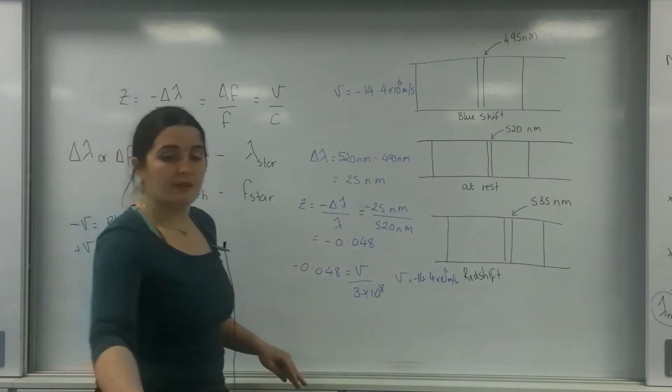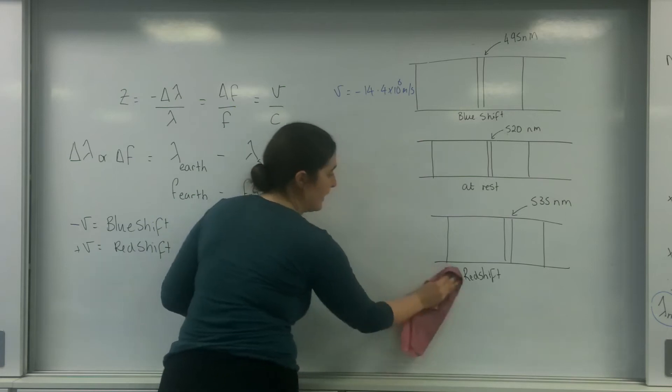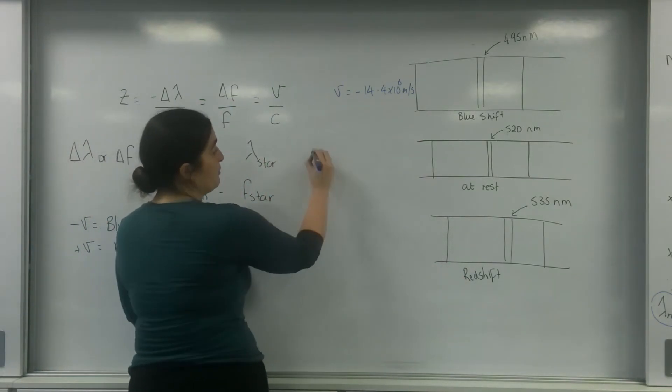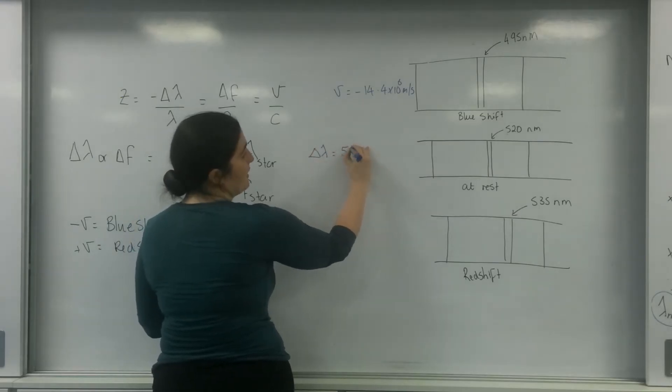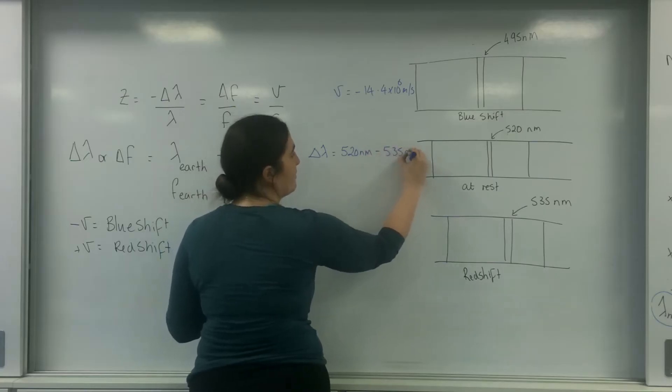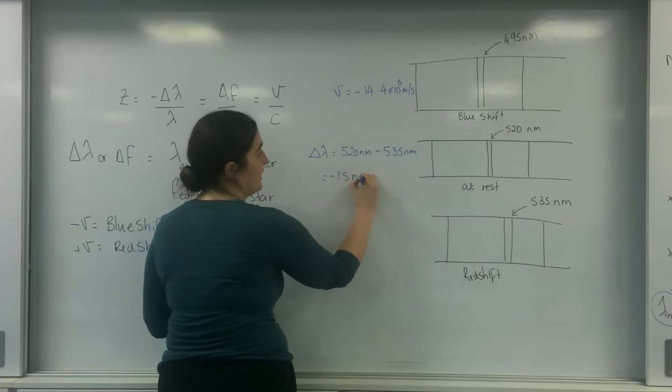Let's do the red shift. It's the same process. So my change in wavelength is going to be 520 nanometers minus 535 nanometers. So that is minus 15 nanometers.